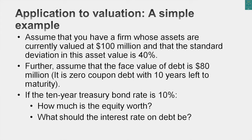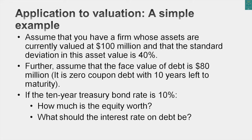Assume you have a business valued at $100 million — whether from a discounted cash flow or relative valuation. This company has only one zero-coupon bond outstanding with a 10-year maturity and an $80 million face value. The estimated standard deviation of the business value is 40%, and the riskless rate is 10%. So the inputs are: value of the business ($100M), face value of debt ($80M), a 10-year zero-coupon bond, riskless rate of 10%, and standard deviation of 40%.